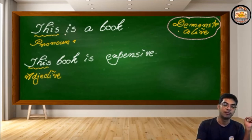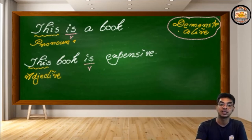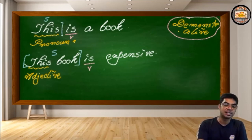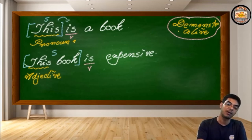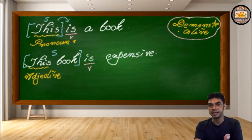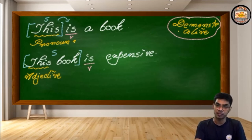Just look at the verb. In the first sentence, 'is' is the verb, and in the second, 'is' is also the verb. Find the subject: in the first sentence, 'this' alone is the subject, and it accepts the verb directly without any other word to support it. Because it behaves as a noun on its own, it is clearly a pronoun.